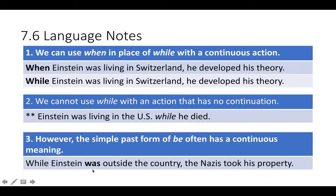This is a little bit tricky: the past form of the verb to be — that's was and were — those are often continuous in meaning. So when I say Einstein was outside the country, the Nazis took his property — being outside the country was something that continued for a longer time, and the Nazis taking his property happened in the middle of that time.